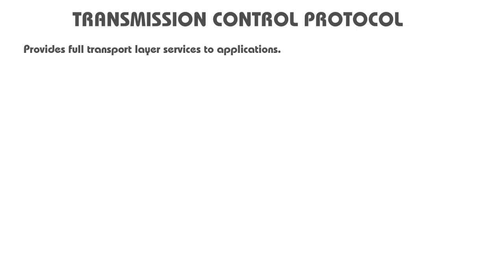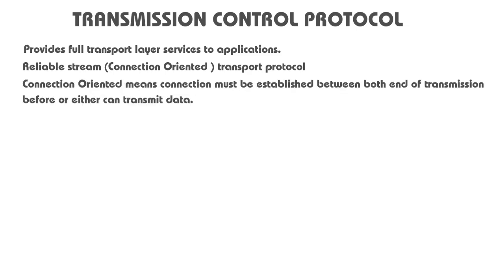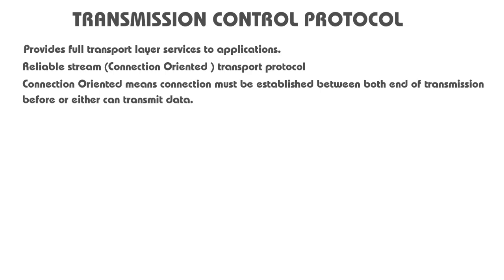Transmission Control Protocol provides full transport layer services to applications. It is a reliable stream transfer protocol, also known as a connection-oriented protocol. Connection-oriented means a connection must be established between both ends of transmission before either transmits data. First there is connection establishment, then data transfer, and after transferring data, there is connection termination.